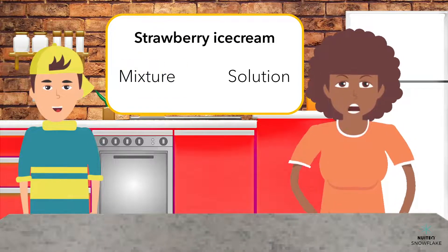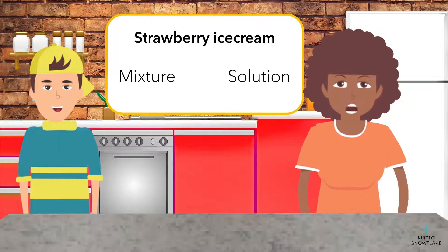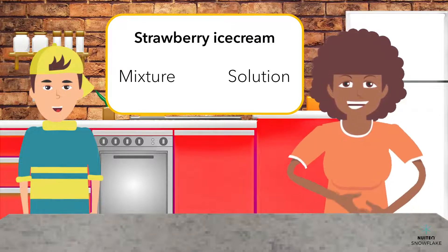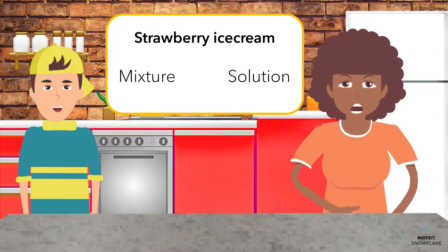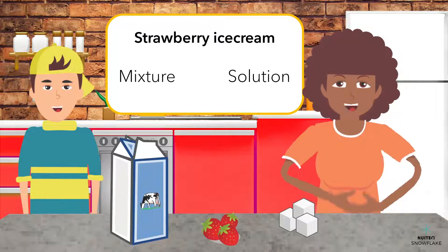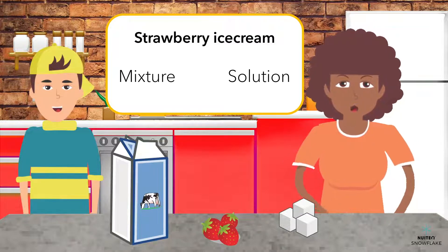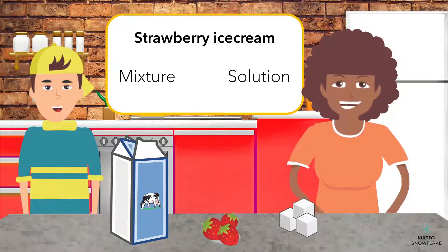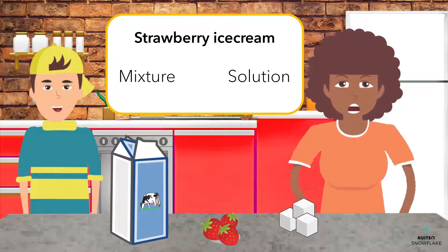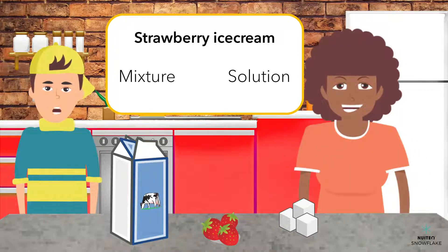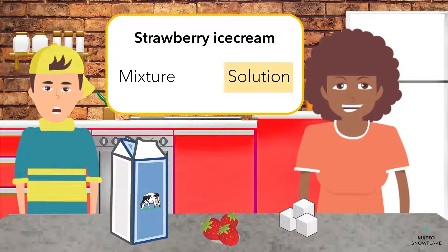Okay, last one. For dessert, we are making strawberry ice cream. We need to combine cream, sugar, and strawberries. We will blend it all together and then freeze it. Is ice cream a mixture or a solution? We are changing the physical properties of the ingredients, so it must be a solution. Fantastic.